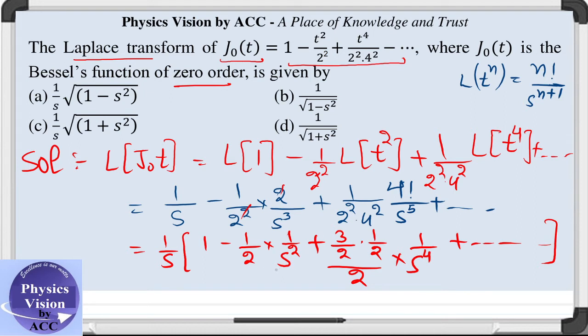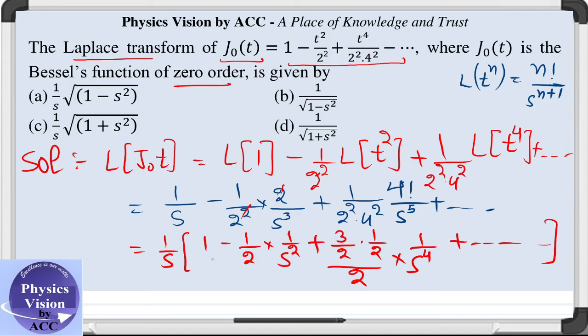So how will we write it? We will write it on the next page. 1 by s will be written in the same way into 1 minus half of 1 by s square. This is basically, we can see that it goes on as the square of this term, and rest of the thing is binomial coefficient that is minus half, minus half into minus 3 by 2 divided by 2 factorial.